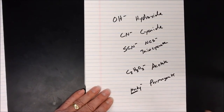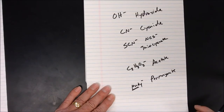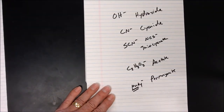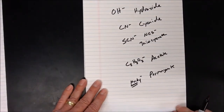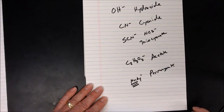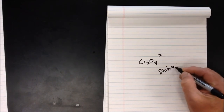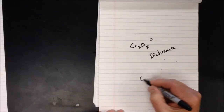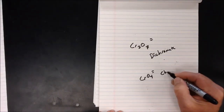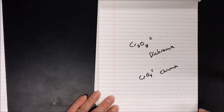MnO4 minus is permanganate — note the prefix per, similar to perchlorate. Manganese in this ion carries a positive seven charge. Being a transition metal that takes on multiple charges, we use Roman numerals in nomenclature. Another transition metal ion is Cr2O7 with a negative two charge — dichromate — and CrO4 with a minus two charge is chromate.